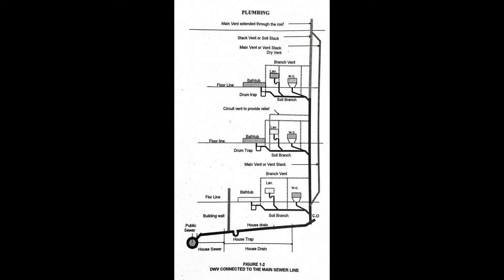Stack group is a term applied to the location of fixtures in relation to the stack so that by means of proper fittings, venting may be reduced to a minimum. Stack vent is the extension of a soil or waste stack above the highest horizontal drain connected to the stack. Stack venting is a method of venting a fixture or fixtures through the soil or waste stack.